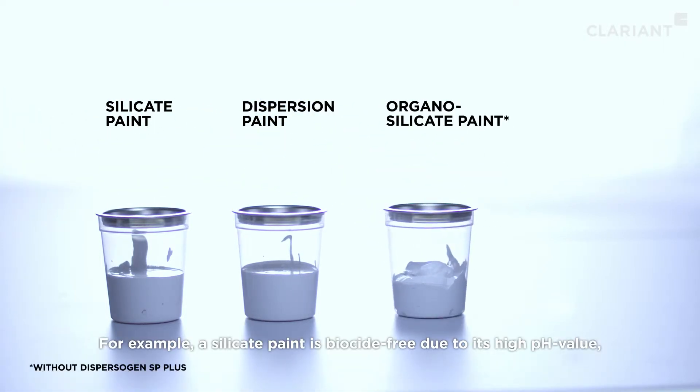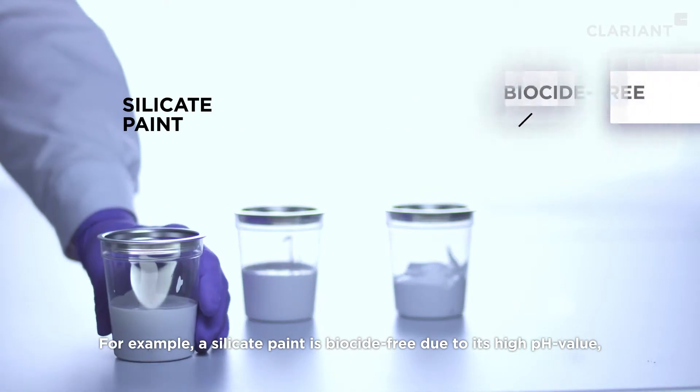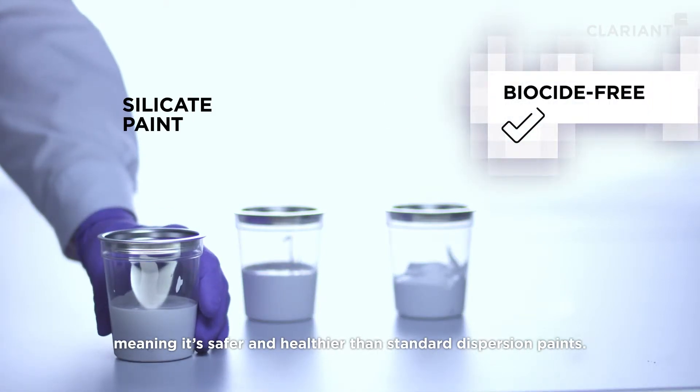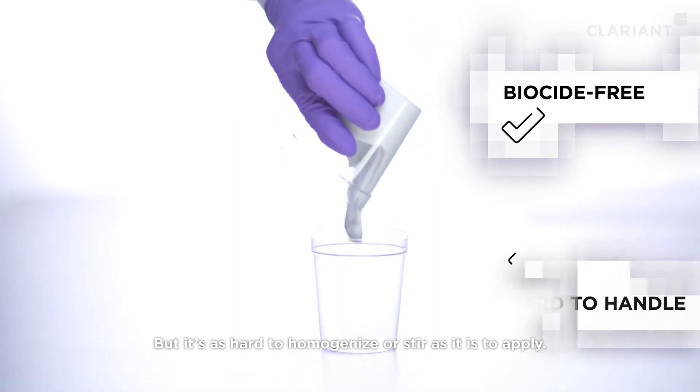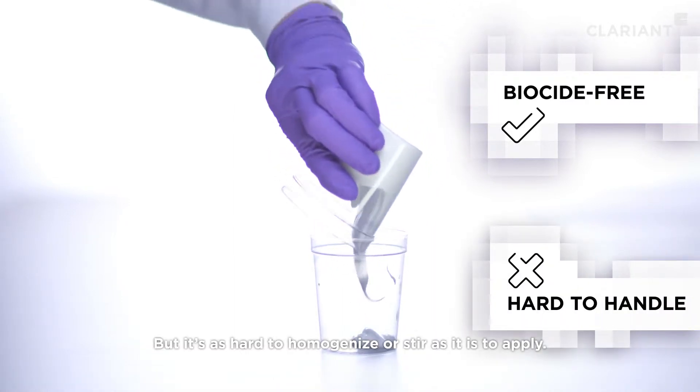For example, a silicate paint is biocide-free due to its high pH value, meaning it's safer and healthier than standard dispersion paints. But it's as hard to homogenize or stir as it is to apply.